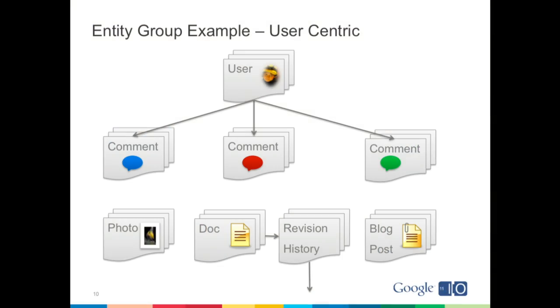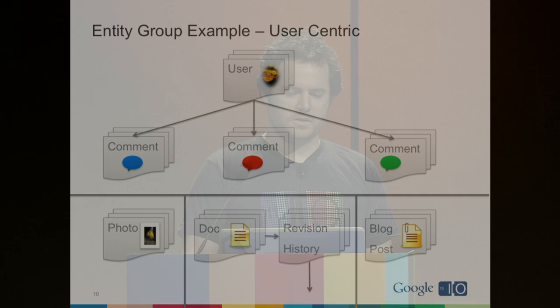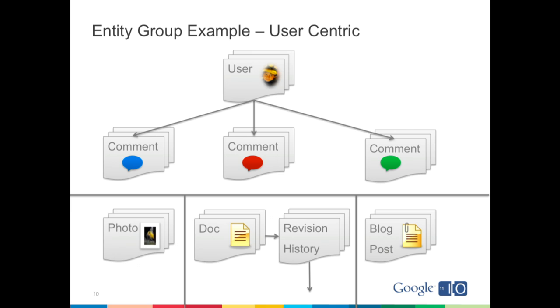Here's another arrangement of the same entities taking into consideration entity group limitations. In this case, I've grouped all comments a user makes under the user entity group. Blog posts are separate from comments, separate from documents, separate from photos. This grouping may be better because it's unlikely for a user to write more than one comment per second, while a blog post that gets popular — say, someone tweets it — could spike in comments. At those points, you probably want a higher write rate than one entity per second.